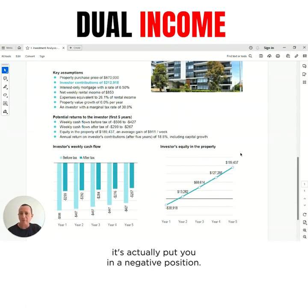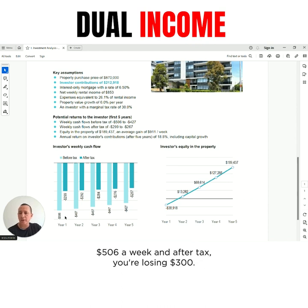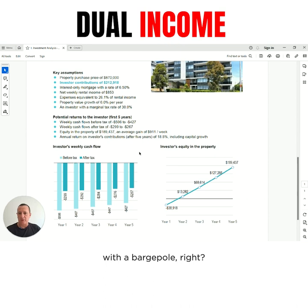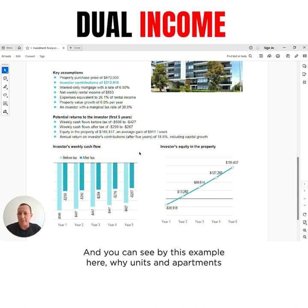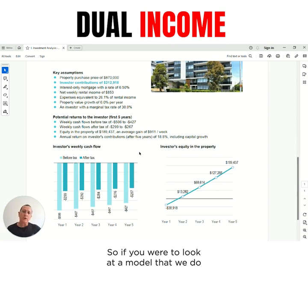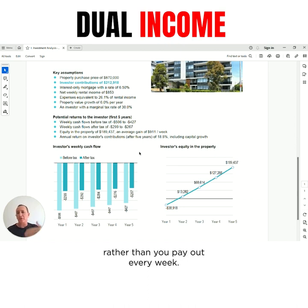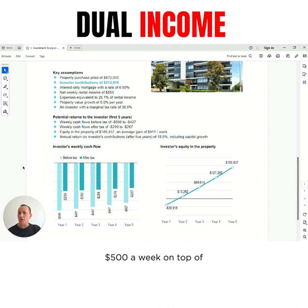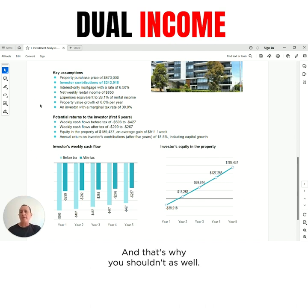What it's done is it's actually put you in a negative position. You can see here that your before-tax position is you're losing $506 a week. And after tax, you're losing $300. So from our point of view, we wouldn't touch this with a barge pole. All the stuff that we do is positive cashflow. And you can see by this example why units and apartments and townhouses are definitely not the go for us. In this example, you have to come up with $500 a week on top of your mortgage to actually keep this property. This is why we wouldn't go anywhere near this kind of property - and that's why you shouldn't either.